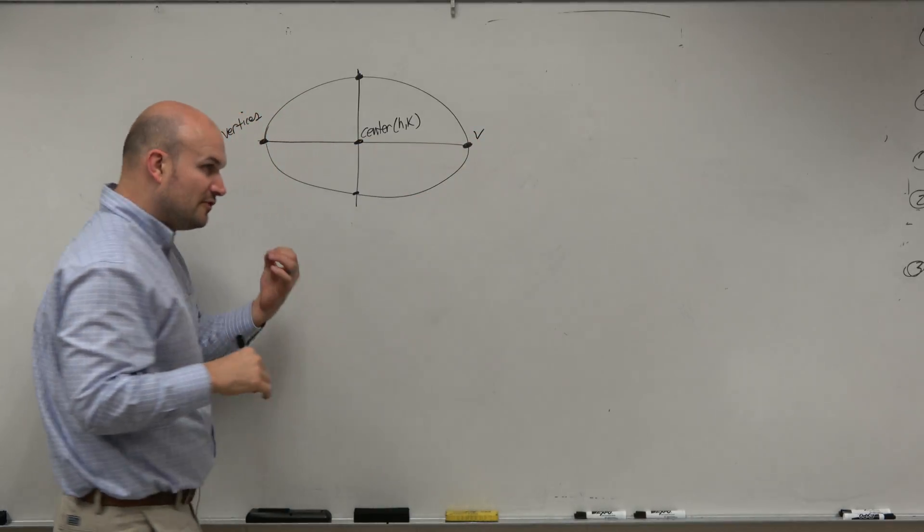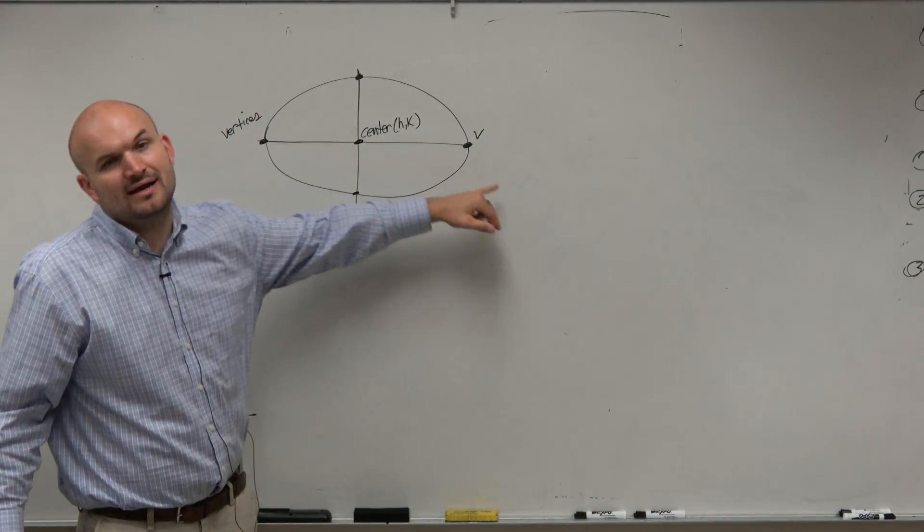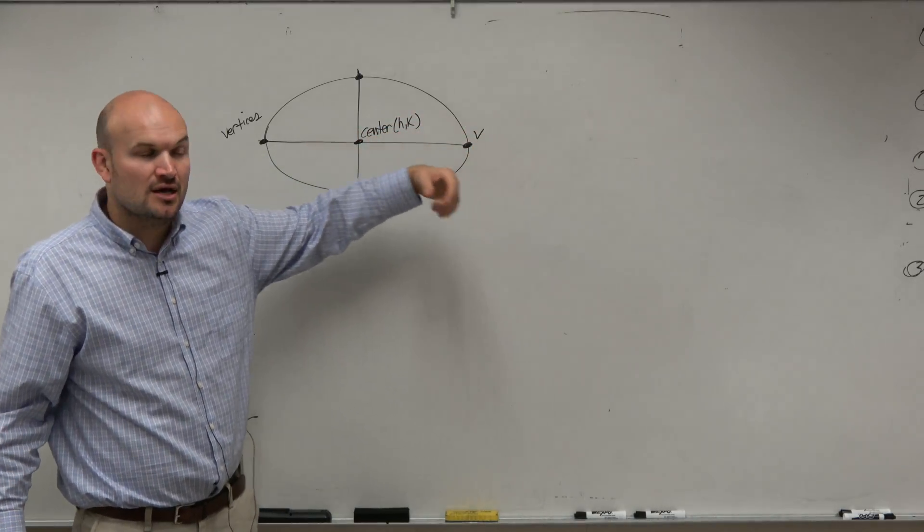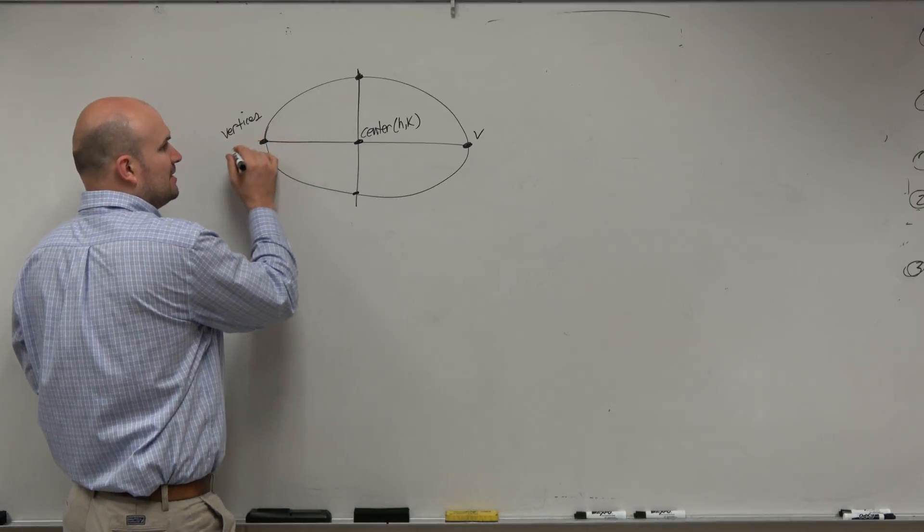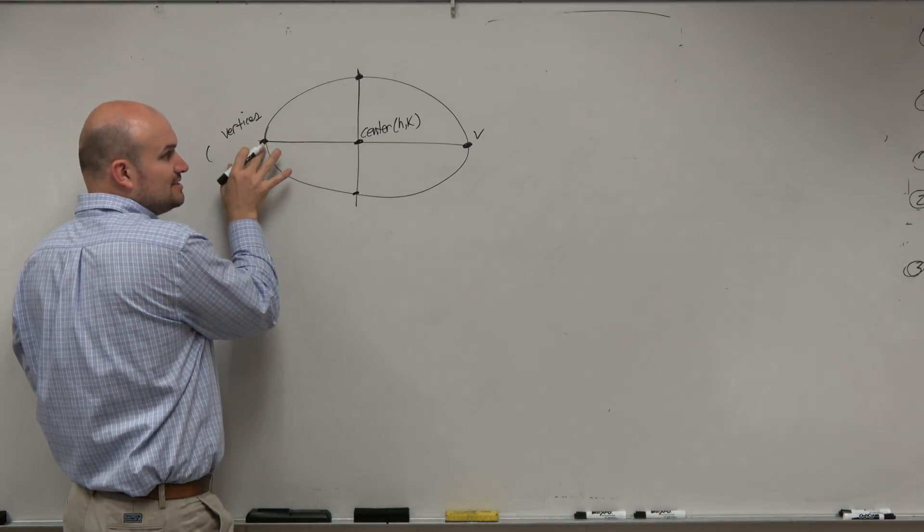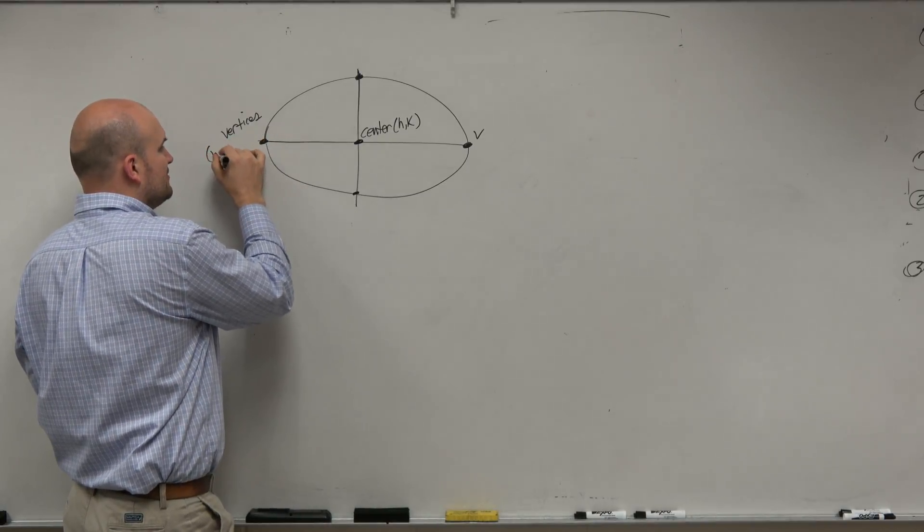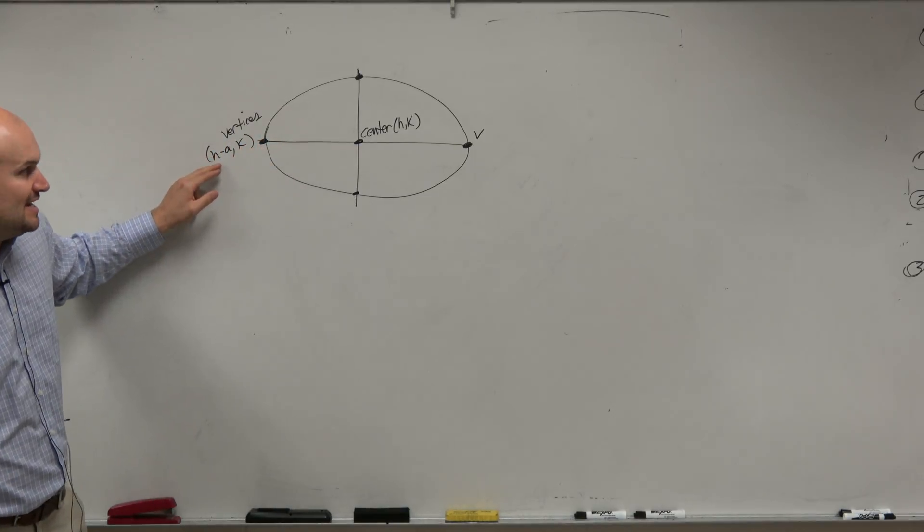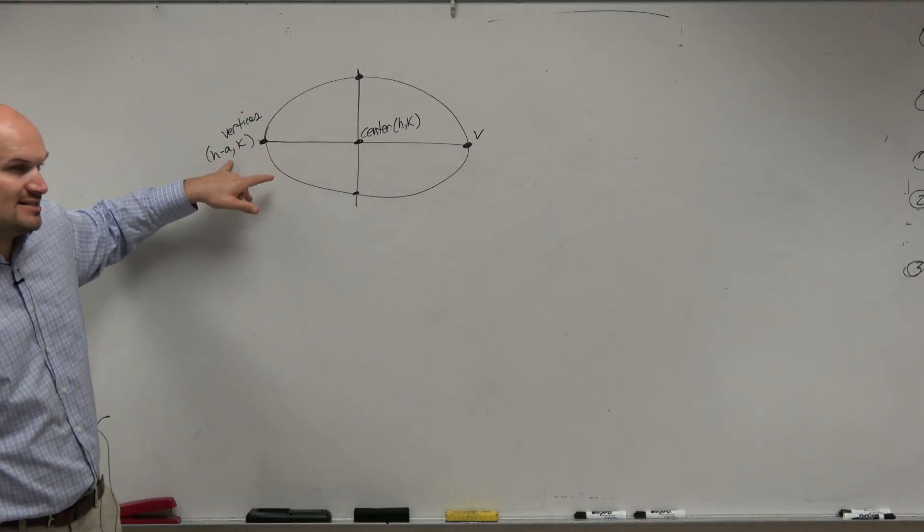And if you guys remember, the vertices were a distance a away. And you guys wrote that down in your notes, so I'm not going to rewrite that. But the distance from your center to your vertices was a. However, I am going to write what the coordinate point would be, because these are coordinate points. So if I wanted to figure out what the coordinate point of my vertices was, I would just take my h coordinate of my center and subtract a.